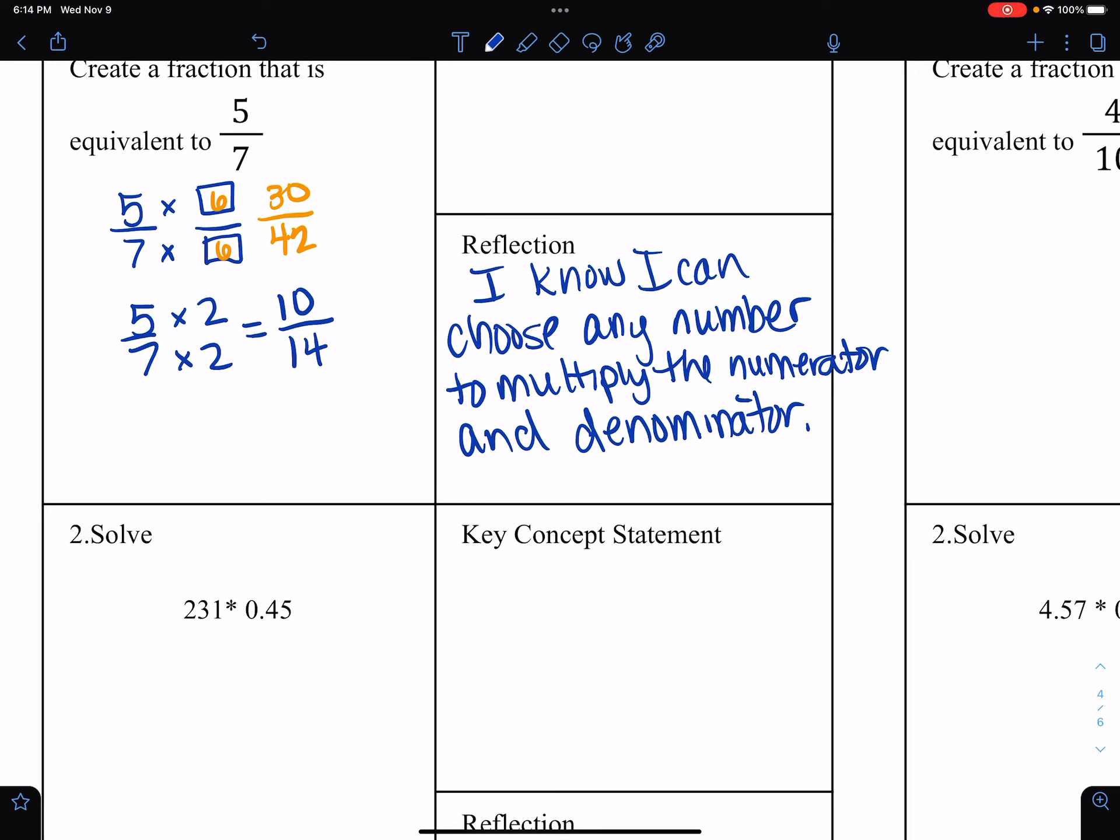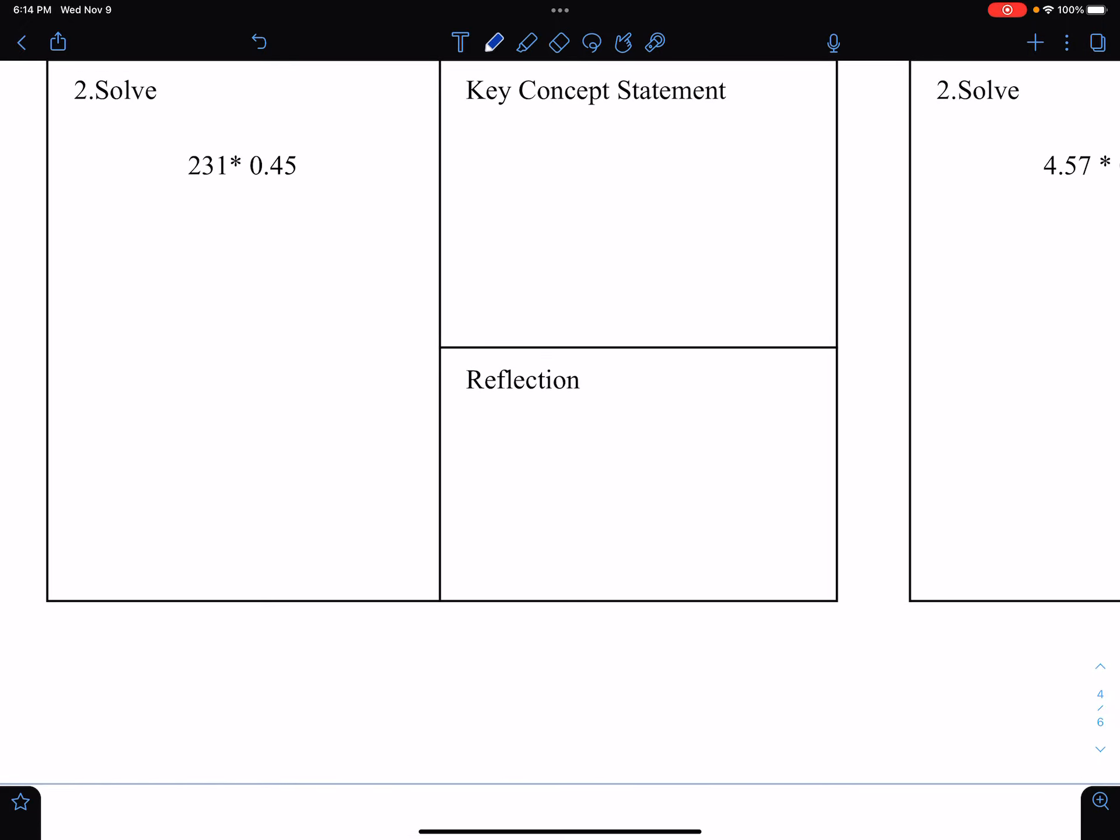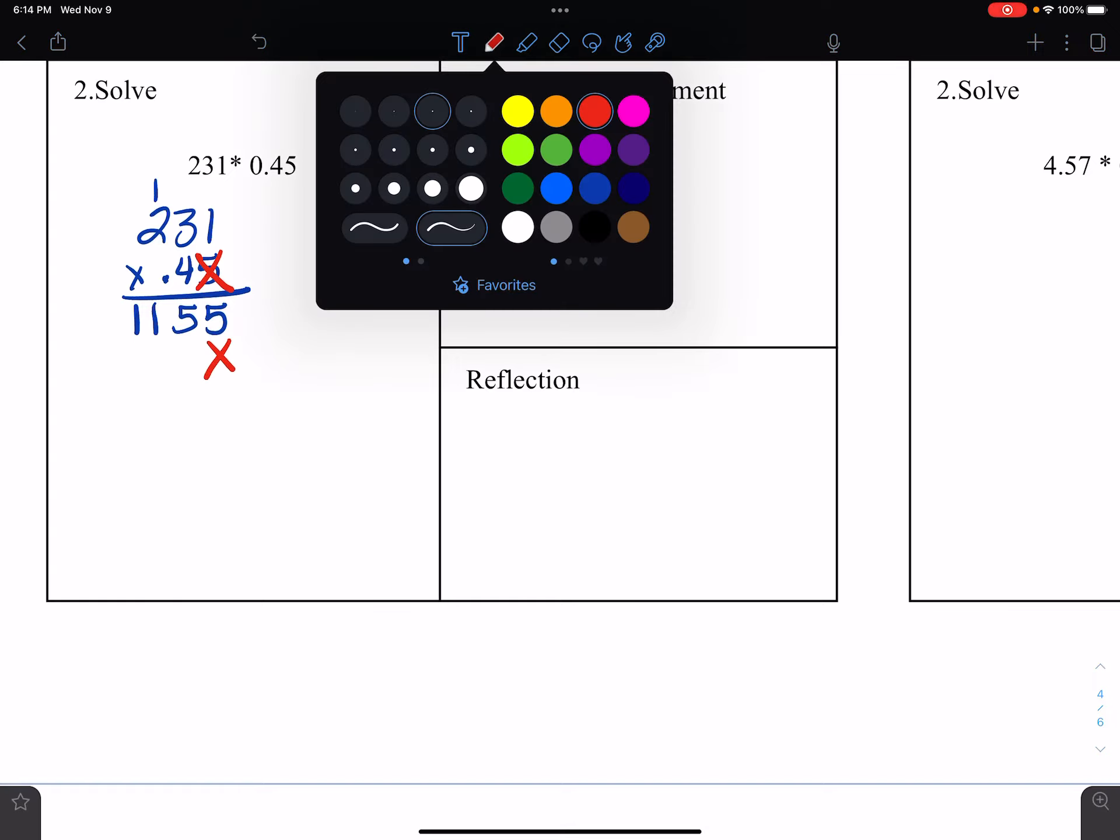We're going to multiply 231 times 0.45. So one times five is five, three times five is fifteen carry the one, two times five is ten and put that one back on. My reminder is since I have finished one place value, I'm going to hold that place value. You could use a zero if you wish, but I'm choosing to use an X.